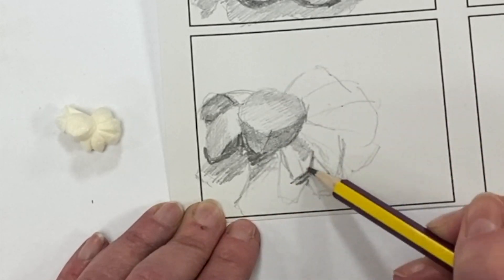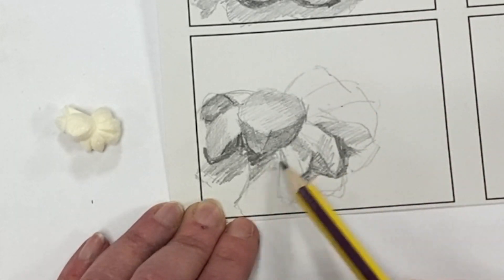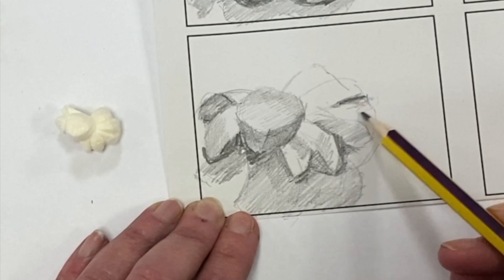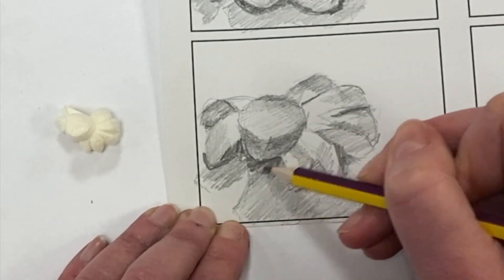The dark areas, the shadows, focusing on the areas of high contrast to get the natural forms of the popcorn as well.